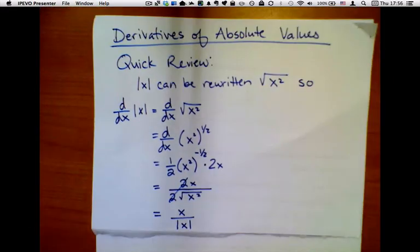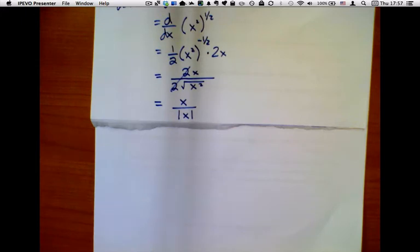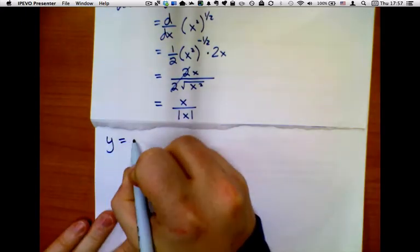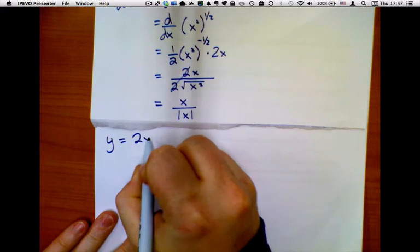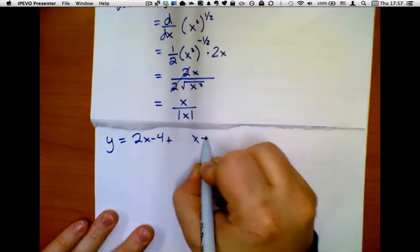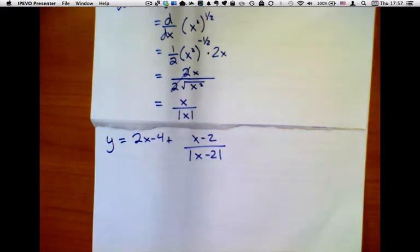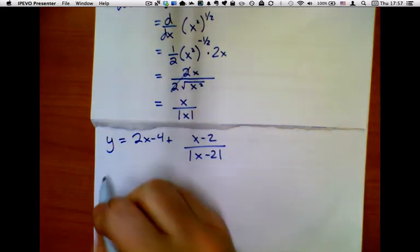Then we wanted to do a more complicated problem, but we ran out of time. So, here it is. The problem was y equals 2x minus 4 plus x minus 2 over the absolute value of x minus 2. And what we want is we want to find the derivative.